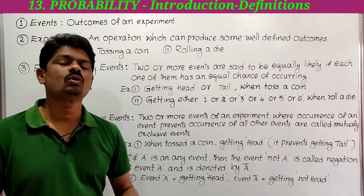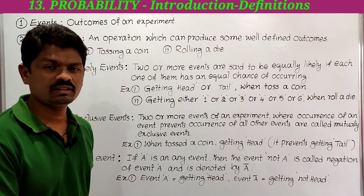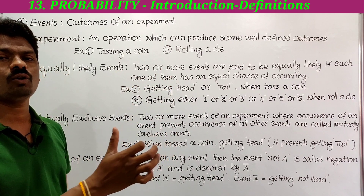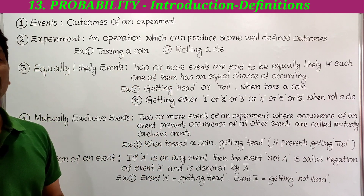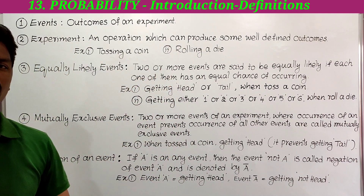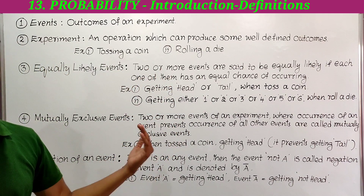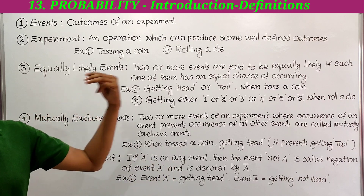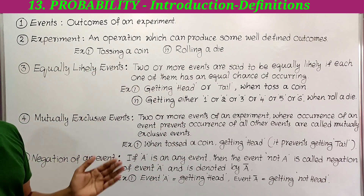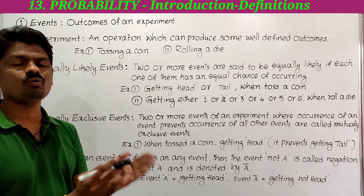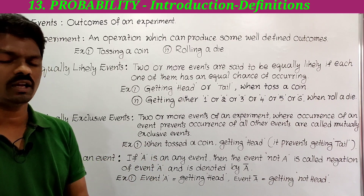For example, when we toss a coin, getting head is one event and getting tail is another event. Both have equal chances of occurring, so these two events are equally likely events.